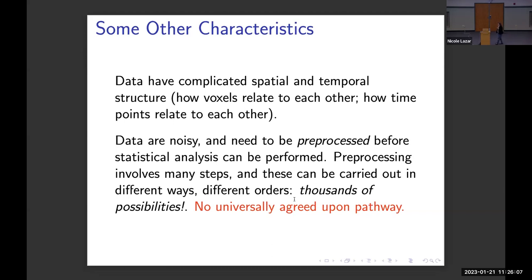Some preprocessing steps can also be switched in order. People have calculated that there may be thousands, if not tens of thousands, of different ways that the data can be preprocessed — and this is just cleaning up the data before any statistical analysis. Historically, there is no universally agreed-upon pathway, which means a lab here at Penn State might do things one particular way, a different lab at Penn State may do them differently, and a lab at Penn will do it differently still.